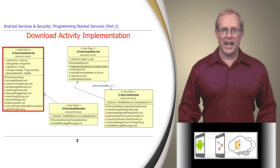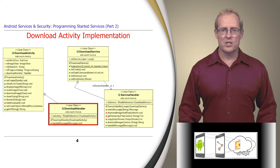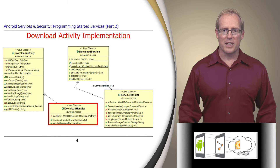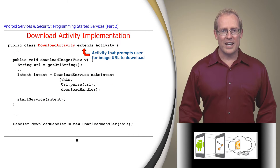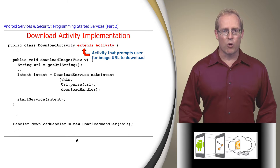We'll start by analyzing the download activity, which contains an instance of a download handler that receives the path name of the file containing the image retrieved by the download service. The download activity extends Activity and displays a screen that prompts the user for the URL of the desired image to download.